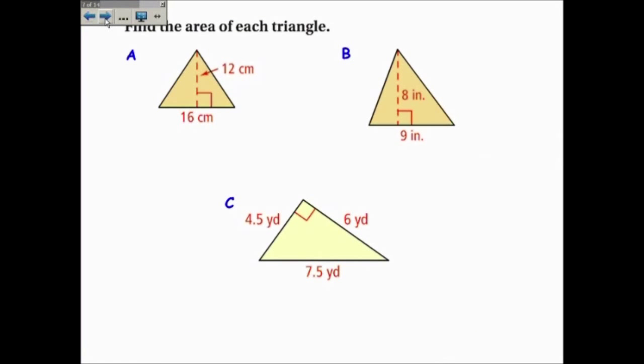So here's a couple of sample examples. Part A, it's one-half the base times the height. Now the base is 16 and the height is 12. So one-half times 16 centimeters times 12 centimeters is, I will do 16 times 12 divided by 2, and I get 96 square centimeters. Not too bad.